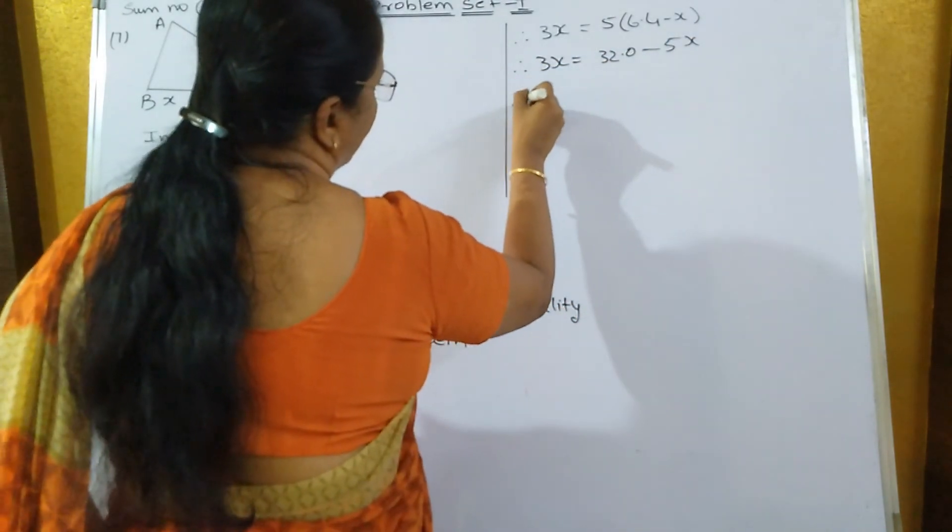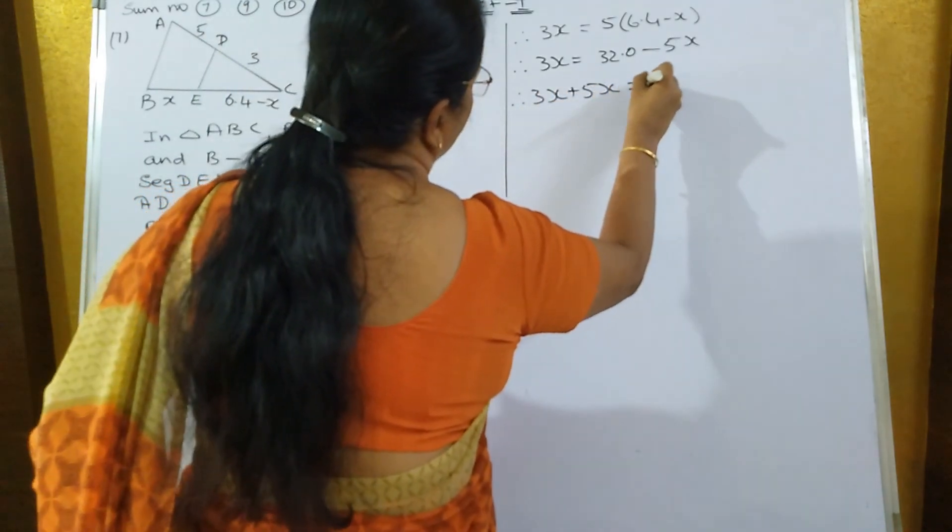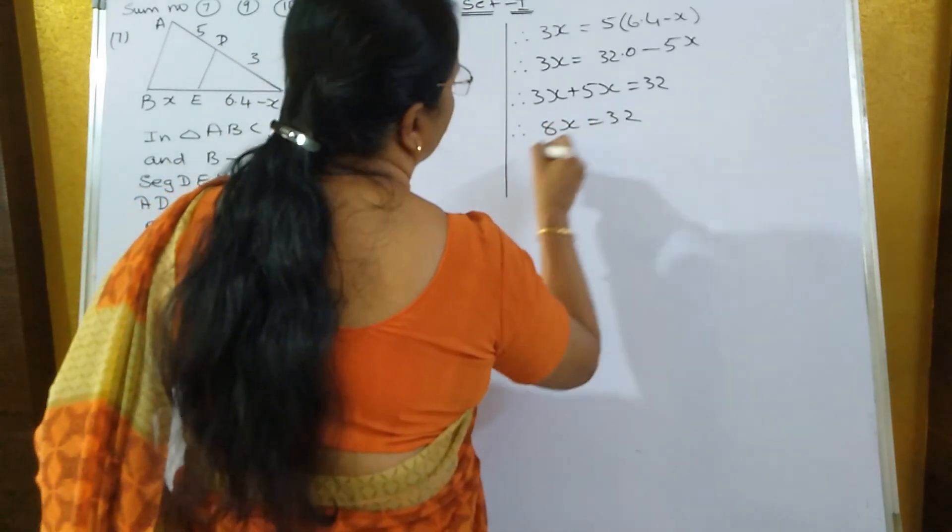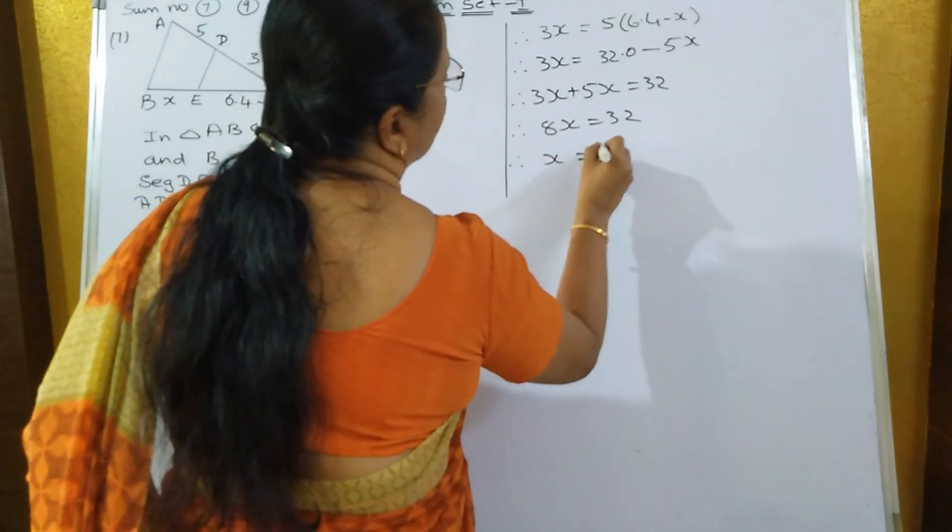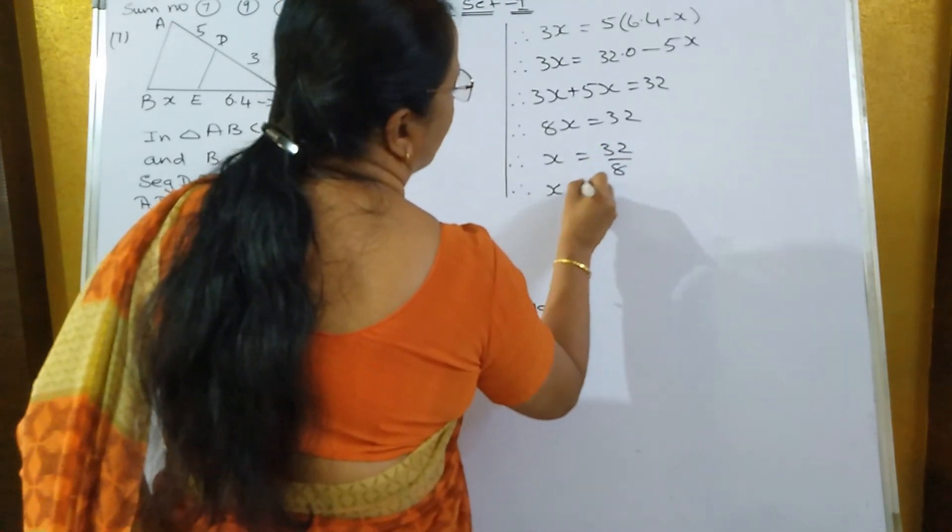Bring this 5X on this side. What you will get? 3X plus 5X is equal to 32. 3X plus 5X is equal to how much? 8X. Therefore, X is equal to 32 upon 8. Therefore, X is equal to 4.